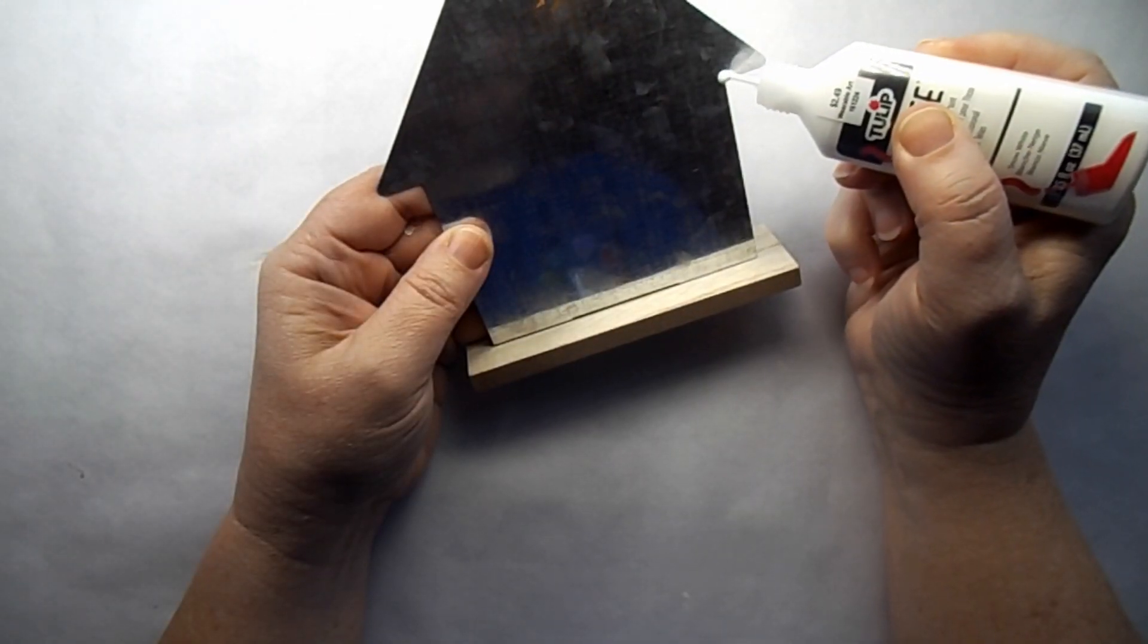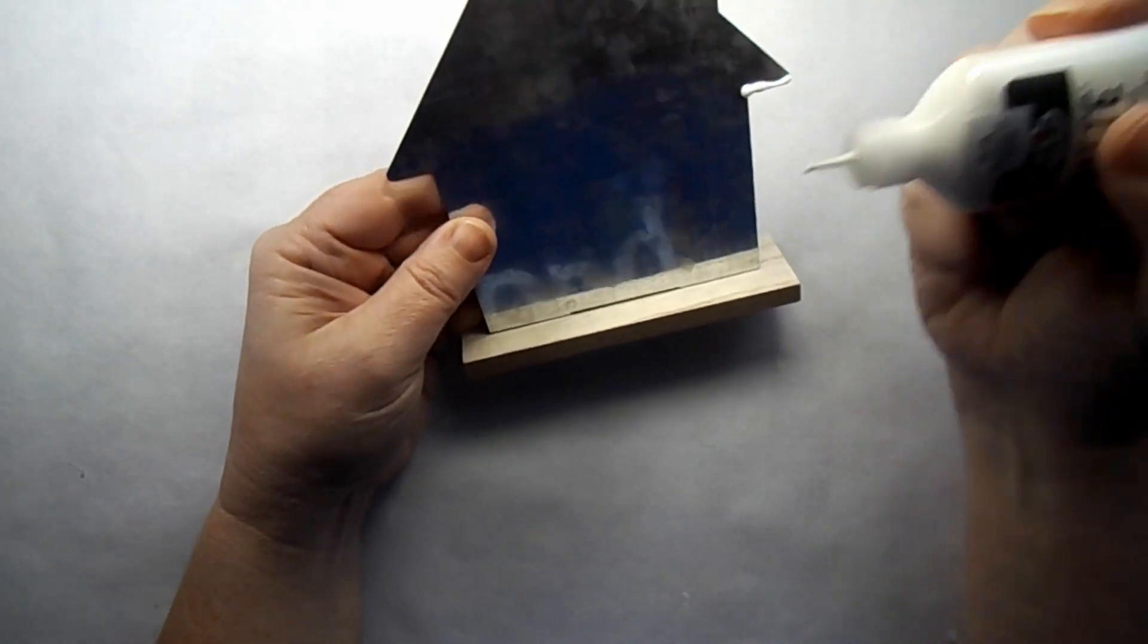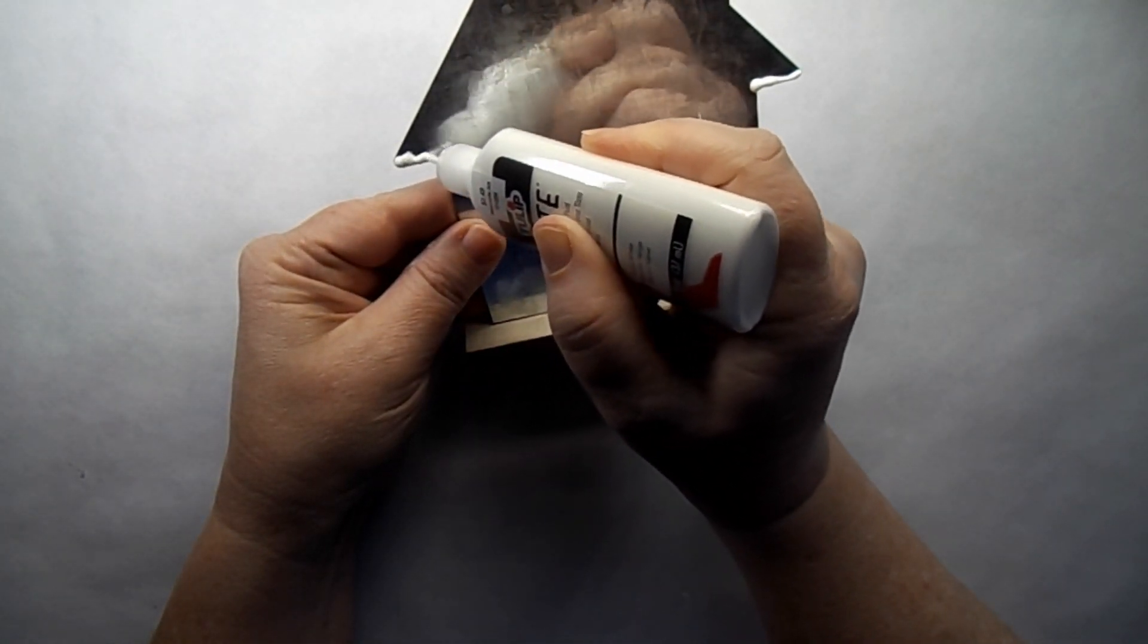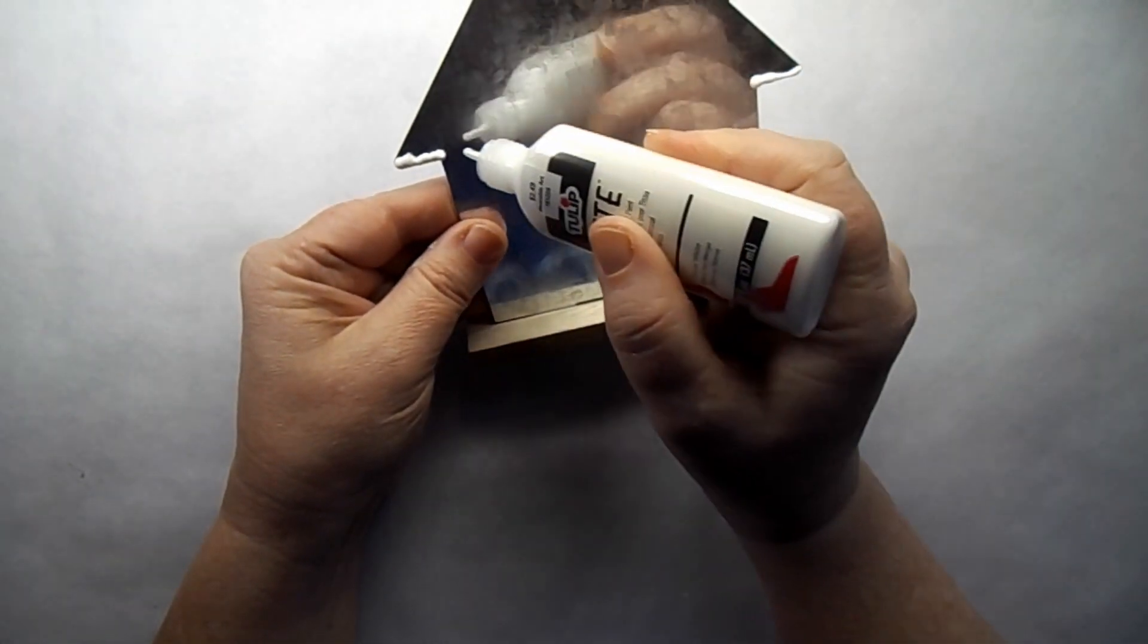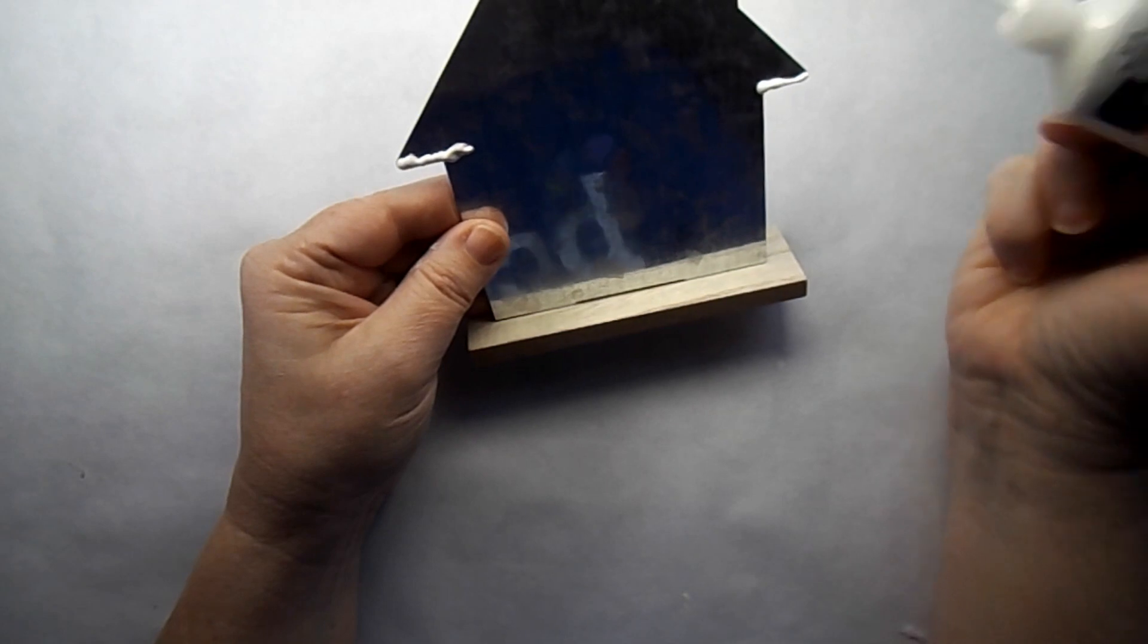I took this metal house from the Dollar Tree and I'm using some fabric puff paint. And I'm just making some snow on the house. Now this is another way to add the snow, a different technique than the first one we did.